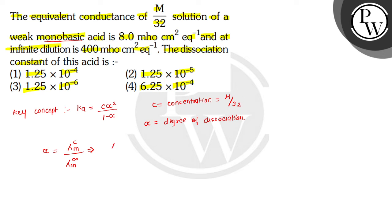So we can write equivalent conductance at concentration C upon equivalent conductance at infinite dilution. Now we can substitute the values: 8/400, which equals 2 × 10⁻².